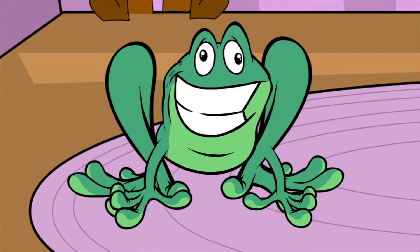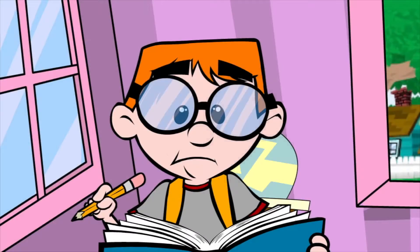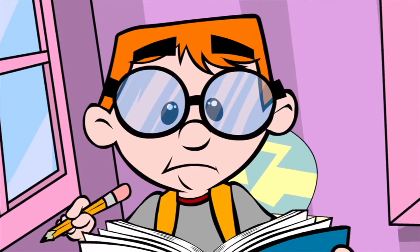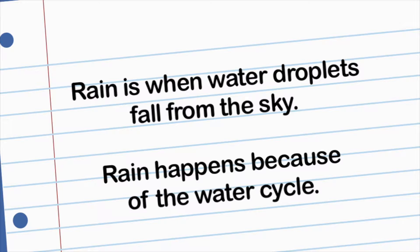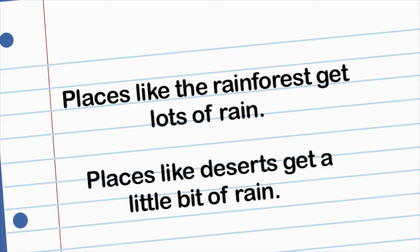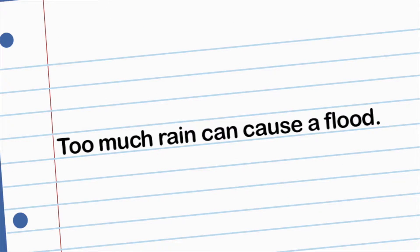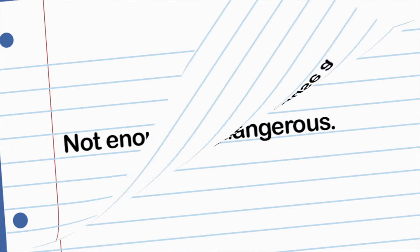I get it. Thanks, Maggie. You're very, very welcome. Today I learned a lot about rainstorms. These are the notes I took in my journal: Rain is when water droplets fall from the sky. Rain happens because of the water cycle. There are two types of rain clouds — nimbostratus and cumulonimbus clouds. Some places like rainforests get lots of rain, and some places like deserts get very little. Too much rain can cause rivers, lakes, and other bodies of water to overflow or flood. Not enough rain can cause a drought. Both can be dangerous.